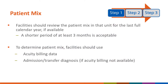We will start with step one of mapping a new location, which is reviewing the patient mix. Each patient care area in a facility that is monitored for NHSN is mapped to one or more CDC locations. The specific location code is determined by the type of patients cared for in that area, also known as the patient mix. NHSN recommends that facilities review patient data in that unit for the last full calendar year; if unavailable, at least three months of data should be reviewed. Acuity billing data should be reviewed to determine patient mix, as it is considered the most accurate depiction of the patient's illness and reason for admission. If this data is not available, the next best option is to review admissions and transfer diagnosis data.